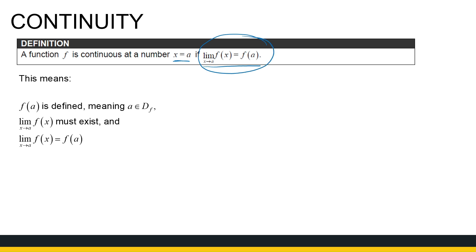This is a very powerful statement — there's a lot in there. It means firstly that f of a must be defined, so a must be in the domain of the function. Second, the limit as x approaches a must exist, and for a limit to exist, both the left and right limits must approach the same number. Once we know it exists, those two numbers have to be equal. That is algebraically how we test if a function is continuous.